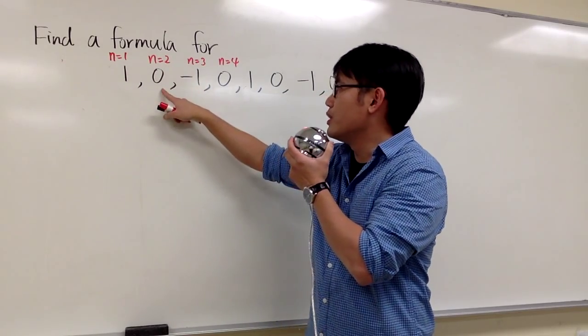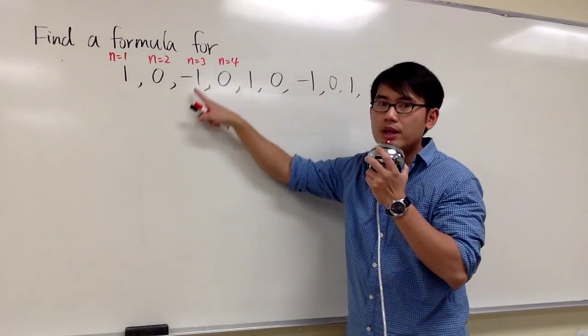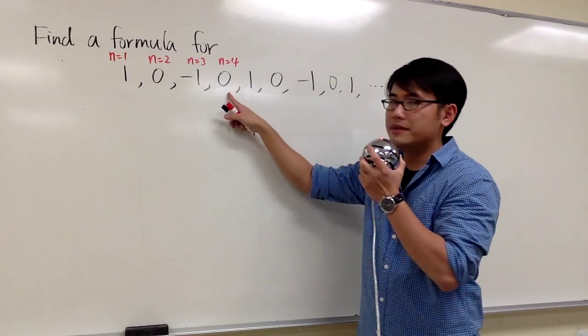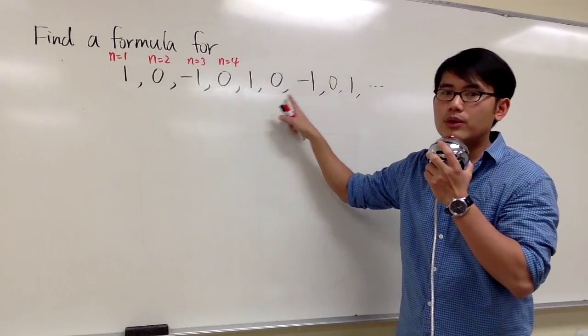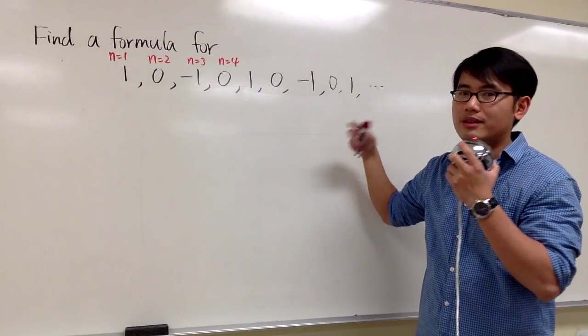When n is equal to 2, we have 0, and when n is equal to 3, we have negative 1, and when n is equal to 4, we have 0, and then 1, 0, negative 1, 0, 1, and so on.